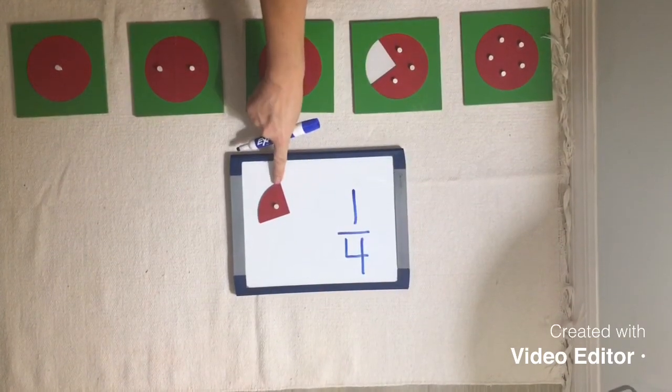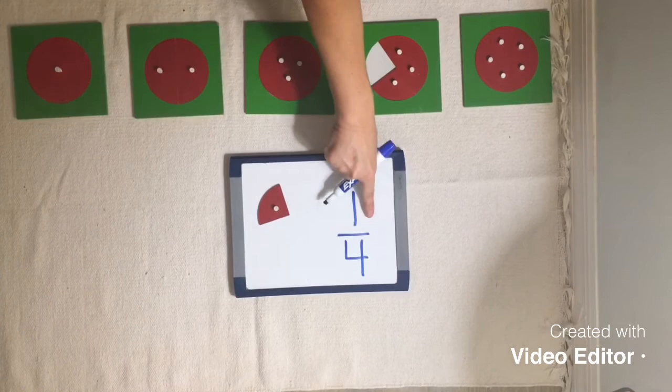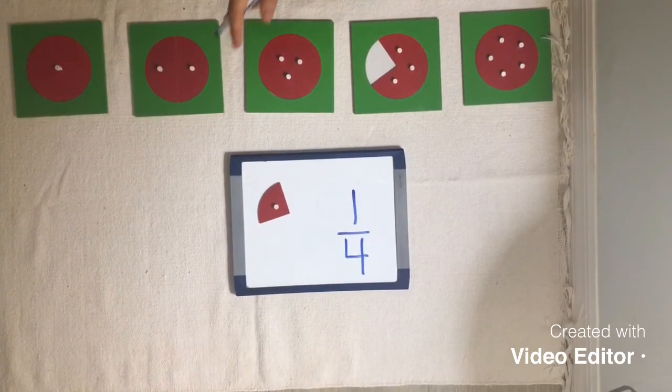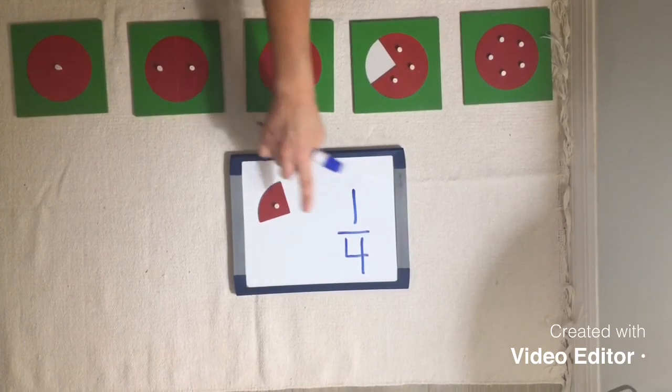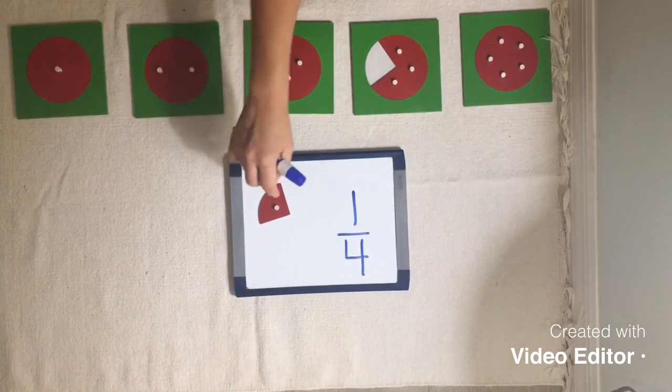One fourth. This is one fourth. This says one fourth. Or another way of saying one fourth is one quarter. This is one quarter. This says one quarter.